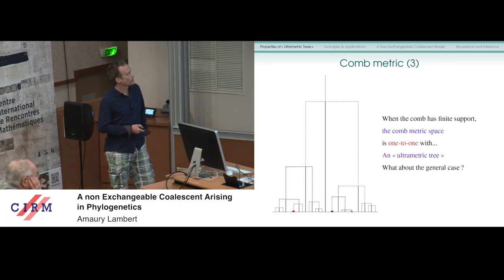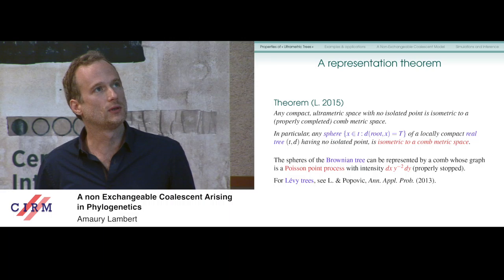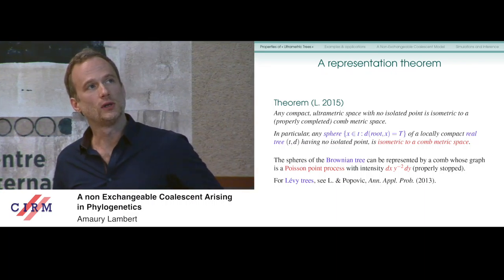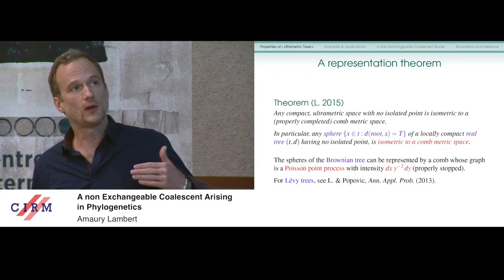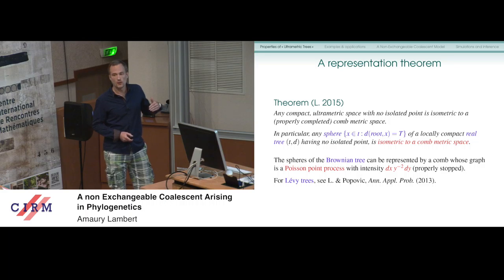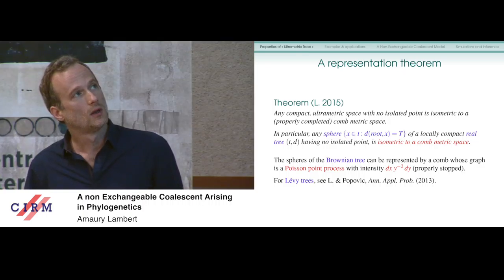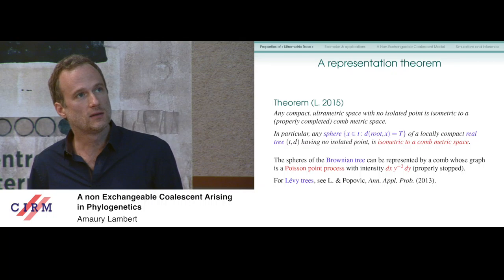What about the general case? We have a representation theorem saying that any compact ultrametric space with no isolated point is isometric to a properly completed comb metric space. If you take any compact ultrametric space, you can always embed it by an isometry into some comb metric space for some well-chosen comb. In particular, if you take any real tree and take the sphere — the set of points at distance capital T from the root — this is an ultrametric space, and it is compact if the underlying real tree is locally compact. A corollary is that any sphere of a locally compact real tree is isometric to a comb metric space.